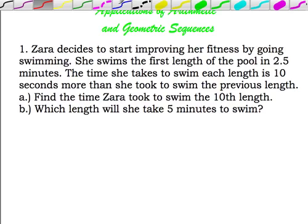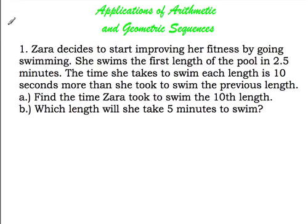In the first example, Zara decides to start improving her fitness by going swimming. She swims the first length of the pool in 2.5 minutes. The time she takes to swim each length is 10 seconds more than she took to swim the previous length. Part A: find the time Zara took to swim the 10th length.